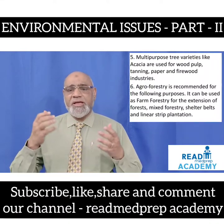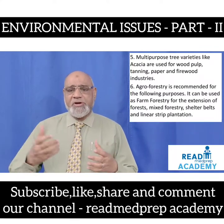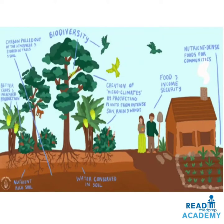Agroforestry is recommended for farm forestry for the extension of forest, mixed forestry, shelter belts and linear strip plantation. To sum up the benefits of agroforestry: better crops and increased production, carbon is pulled out from the atmosphere and stored in the trees and soil, making the soil nutrient-rich. Biodiversity improves, water is conserved in the soil, creation of microclimates protecting plants from intense sun, rain and winds, and food and income security along with nutrient-dense foods for communities.